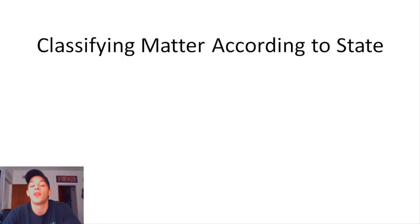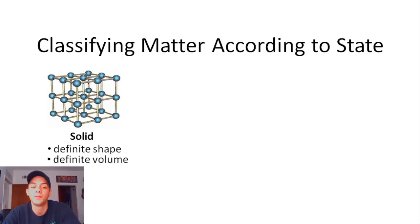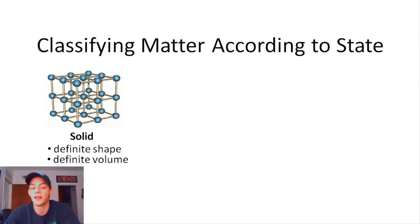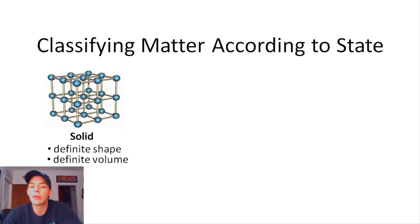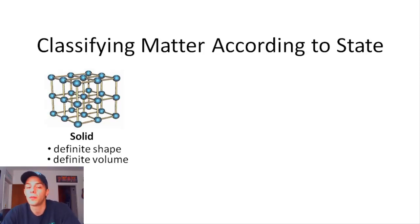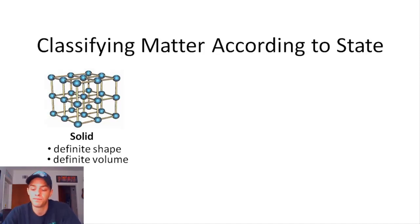In solid matter, the atoms or molecules that compose the matter are very close together and locked into place. They do vibrate a little bit, but they don't move around or past one another. It is for this reason that solids have a definite shape and a definite volume.